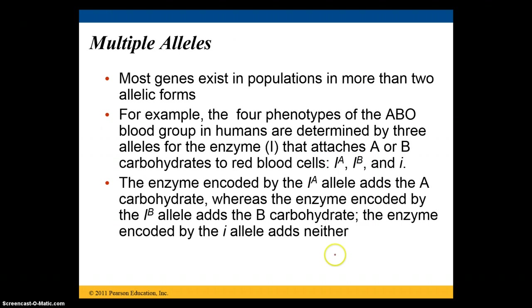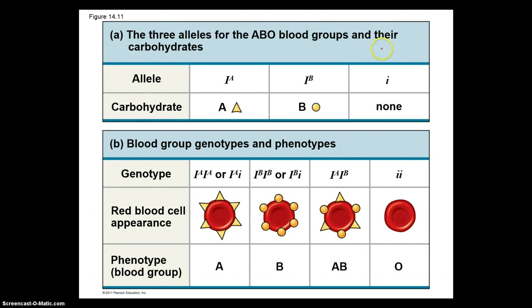There are many situations in which multiple alleles govern a phenotype. For example, ABO blood type is determined by three alleles for an enzyme that attaches A or B carbohydrates to red blood cells. The IA allele codes for the A carbohydrate, IB codes for the B carbohydrate, and the recessive allele adds neither, giving us type O blood. The resulting genotypes produce different red blood cell appearances, leading to different phenotypes. You should know this form of multiple allele inheritance.